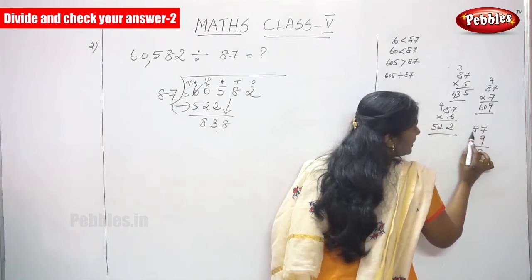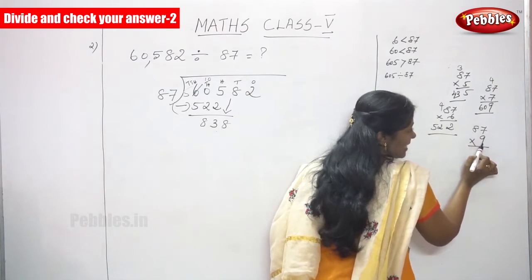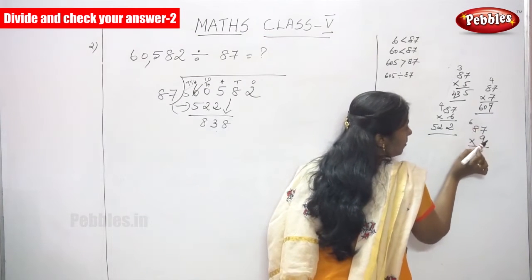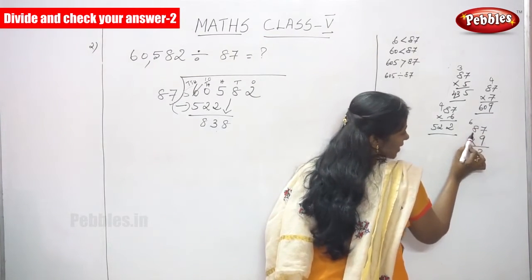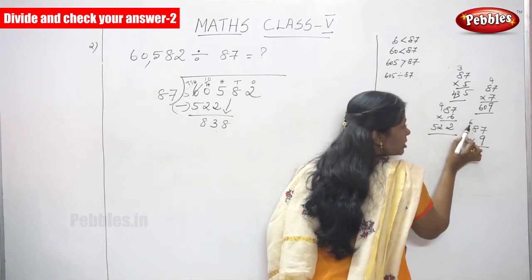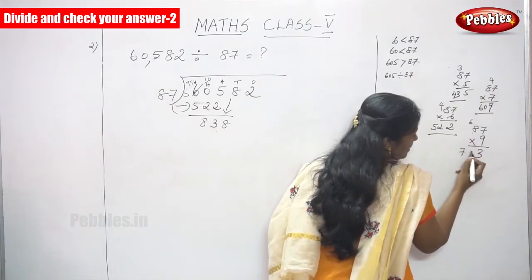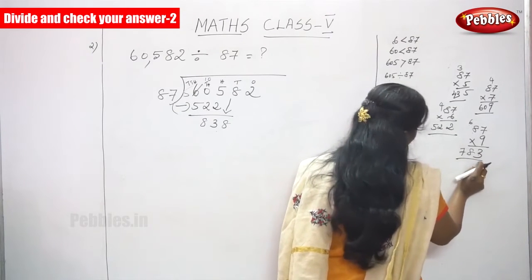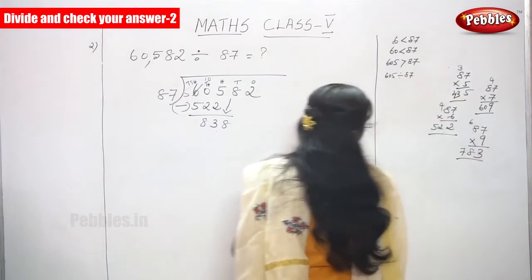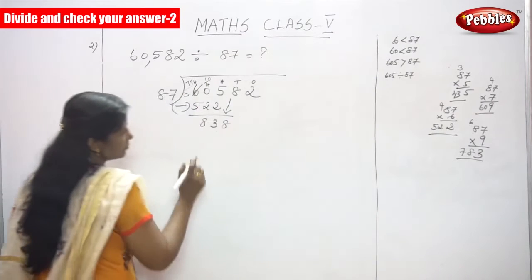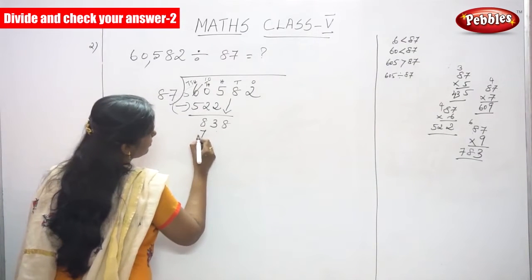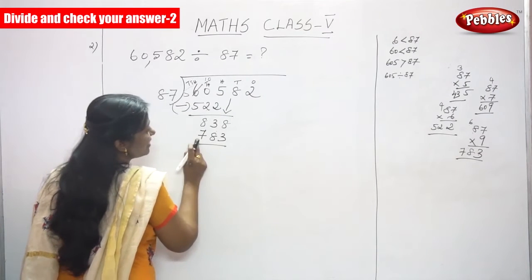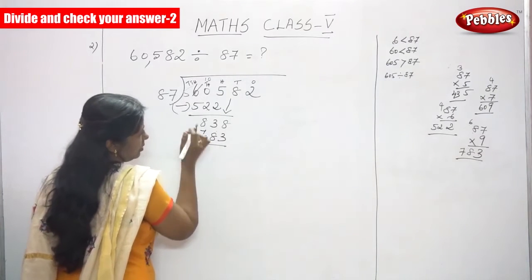So 87 multiplied by 9: 9 sevens are 63, write 3 and the remainder goes to the top. 9 eights are 72, 72 plus 6 is 78. That is 783. Because 783 is less than this number.